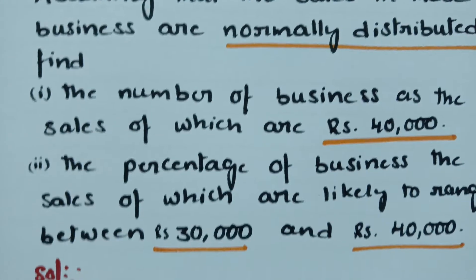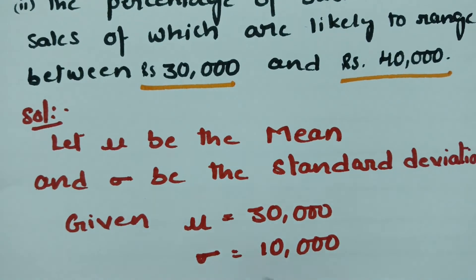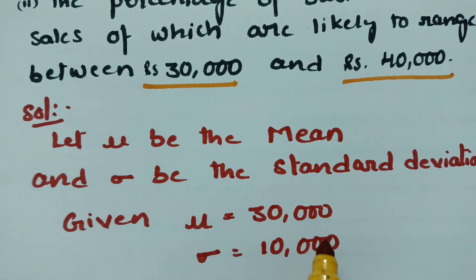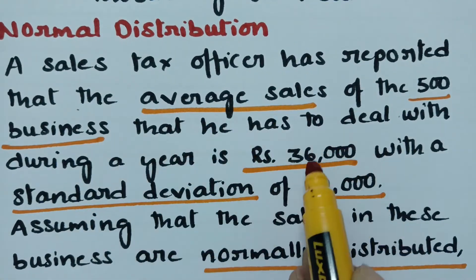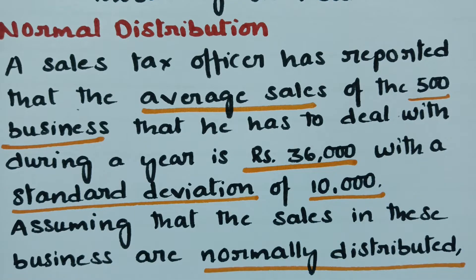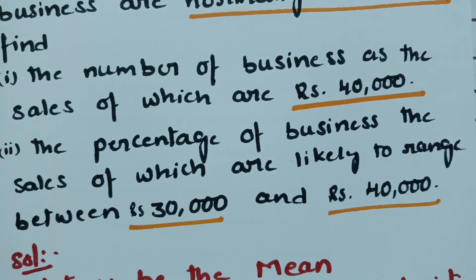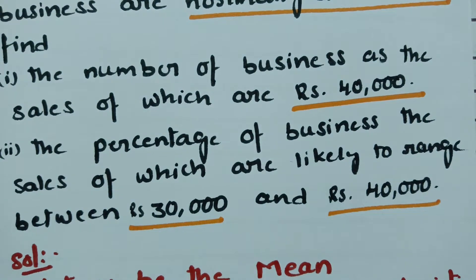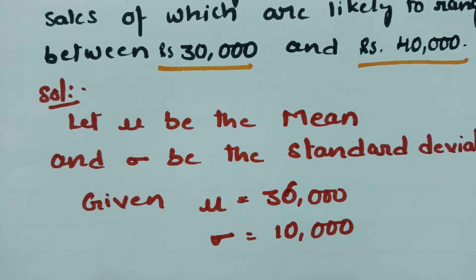Let mu be the mean and sigma be the standard deviation. From the question, the mean mu is equal to 36,000 and the standard deviation sigma is equal to 10,000.